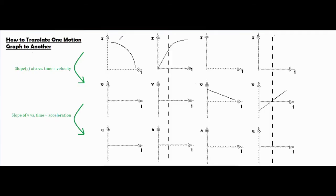We have a position versus time graph that's clearly curved, so I can already tell that it's accelerating because its slope is changing, therefore the rate that it's moving is changing. Right off the bat, it's pretty easy to tell that it's moving downward, therefore it has a negative velocity. So I know for sure that I'm going to draw a line in the negative region for my velocity versus time graph, making sure it goes under zero, and making sure that line isn't flat because the velocity is changing.